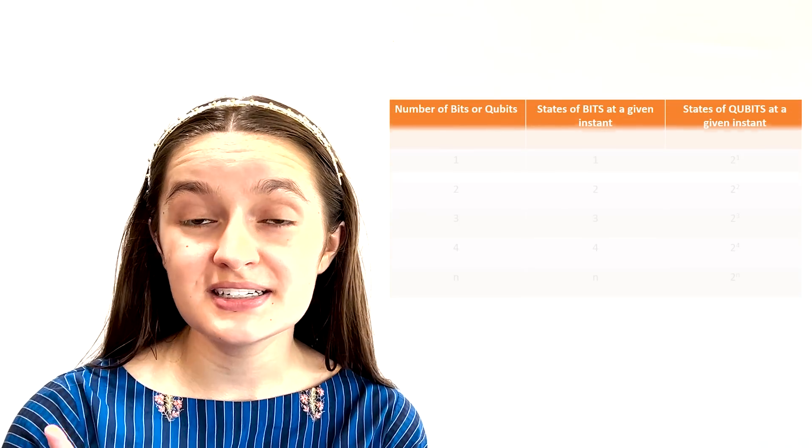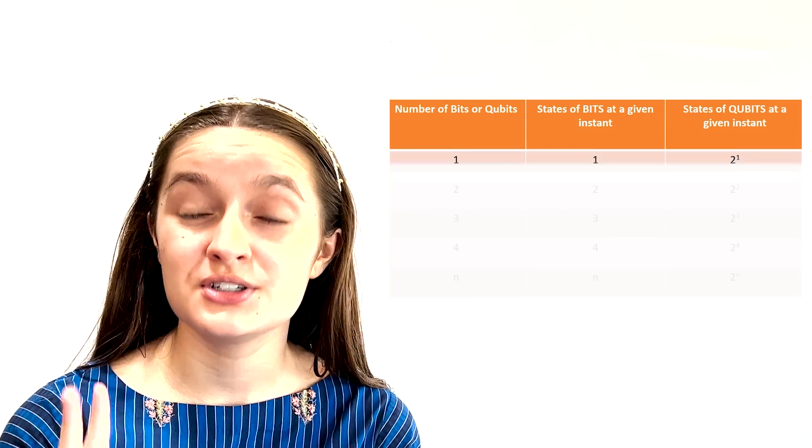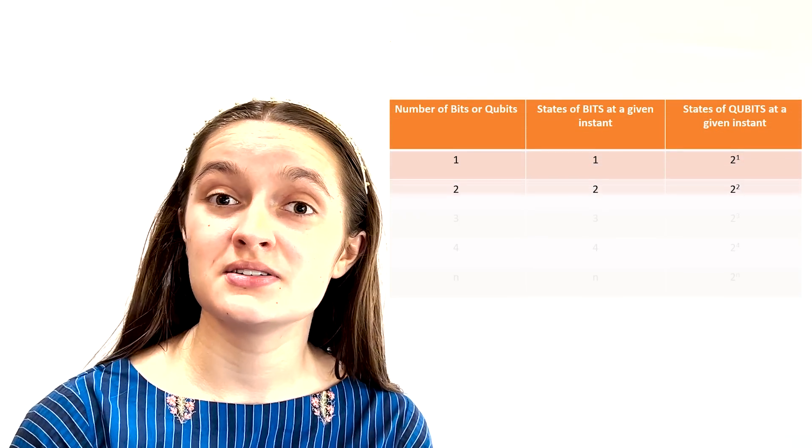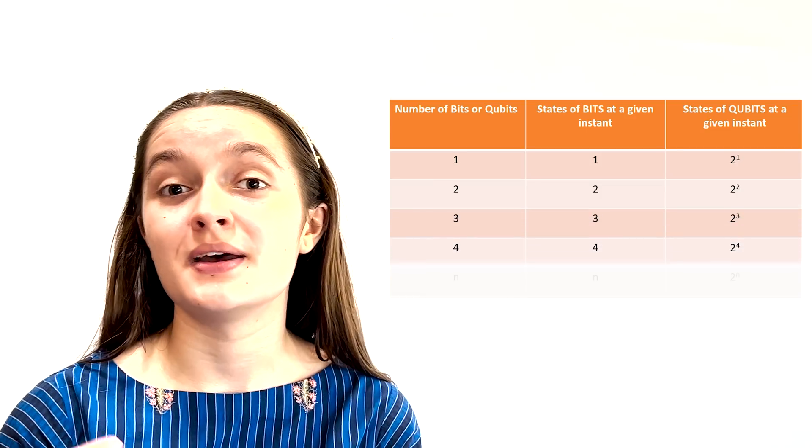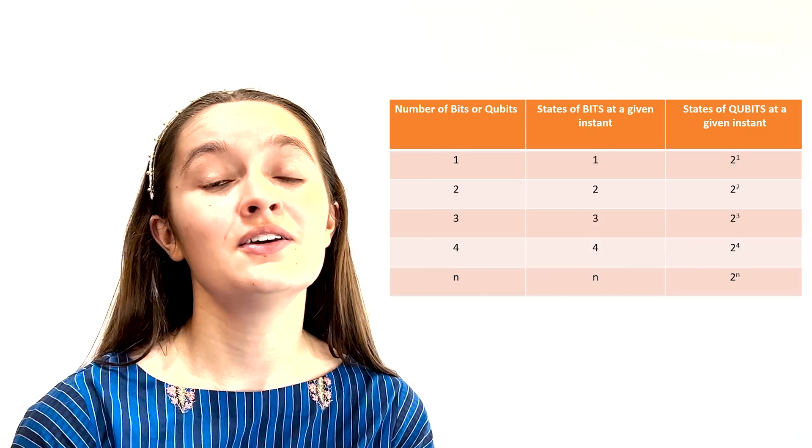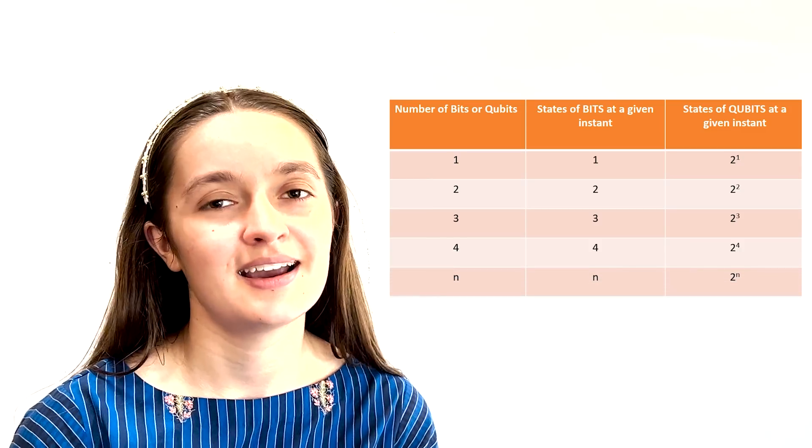A bit signifies one state, and a qubit signifies two states. Two bits, two states. Two qubits, four states. Three bits, three states. Three qubits, eight states, and so on.